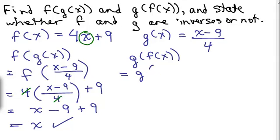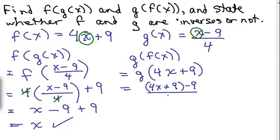So this is g of, what's f of x? It's 4x plus 9. So g of x is x minus 9 over 4, so I'm going to replace this x with what's in the parentheses, the 4x plus 9. So I have a fraction, and I'm putting in 4x plus 9, that's what x is, minus 9, all over 4. So in the numerator, 4x plus 9 minus 9 is 4x. 4x over 4 is x, so I verified it. So these are inverses.